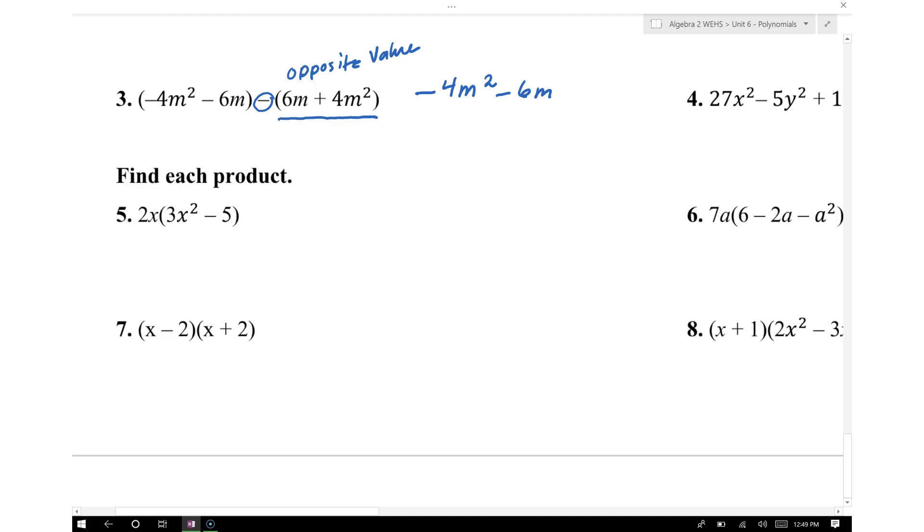For example, we have 6m, that's going to be negative 6m, and we have 4m squared, so that's going to be negative 4m squared. The next step is to combine like terms. A common mistake that students think is that all these are going to be zero.